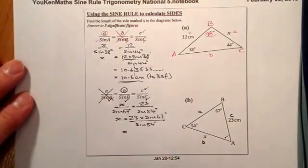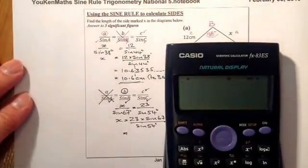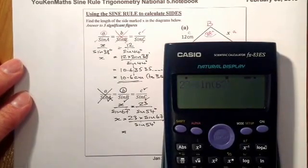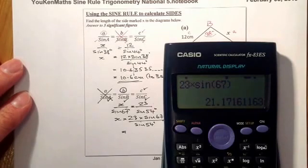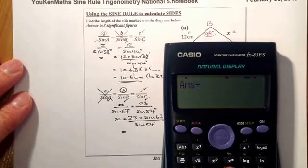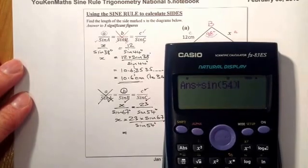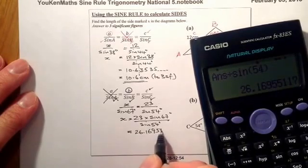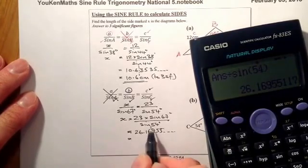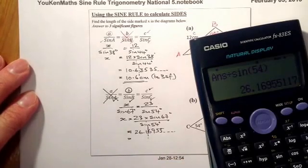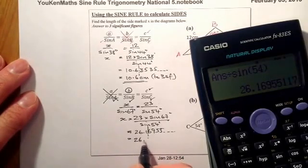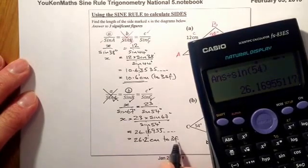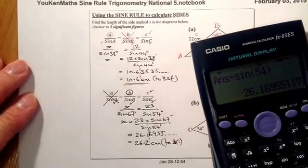From there, just enter into the calculator. So 23 times sine of 67, close that bracket, press equals, divide by the denominator, which will be sine 54 degrees. I'll get an answer of 26.16955, and if I'm rounding that number to three significant figures, I'll get an answer of 26.2 centimetres. That's to three significant figures.